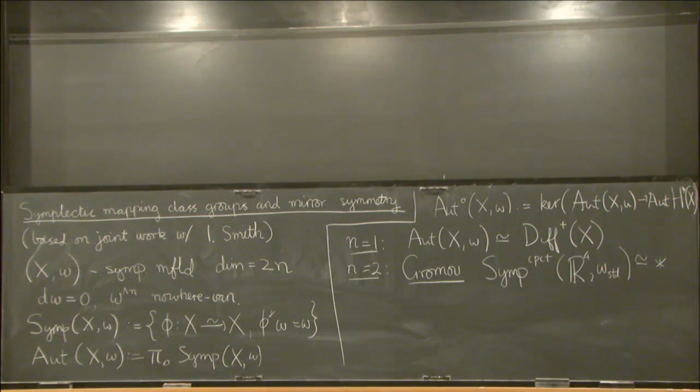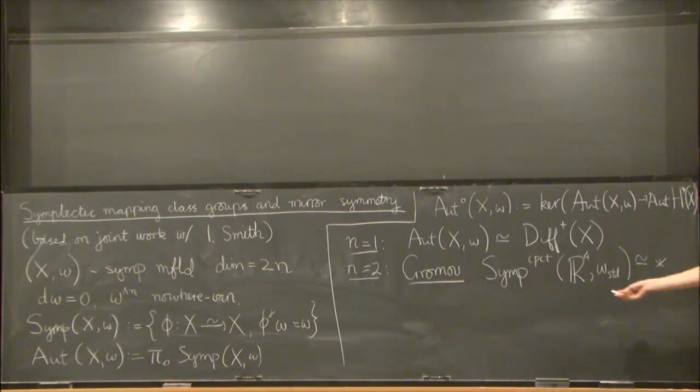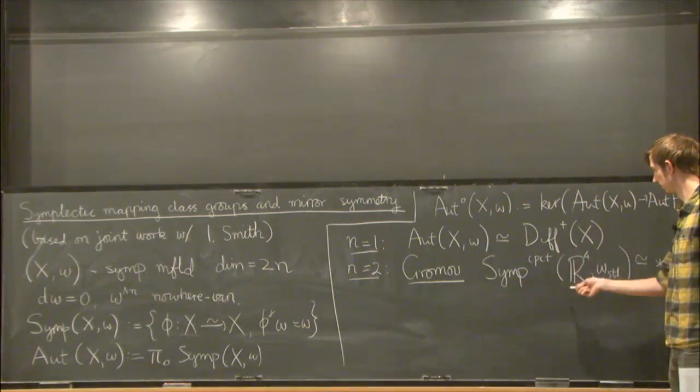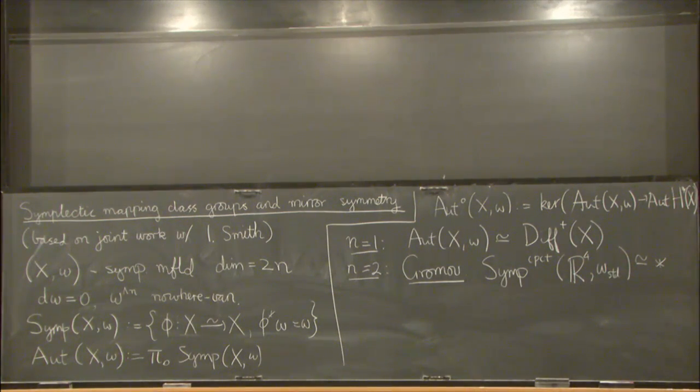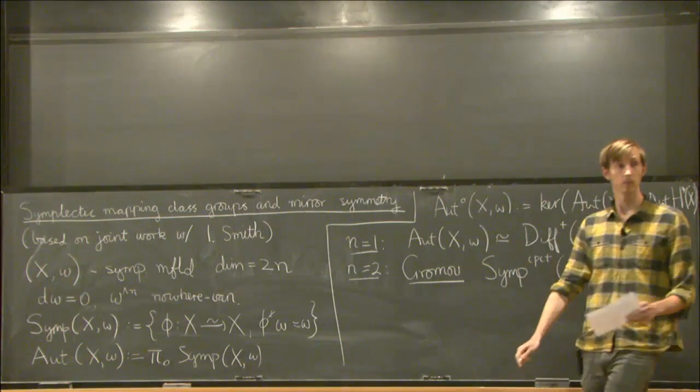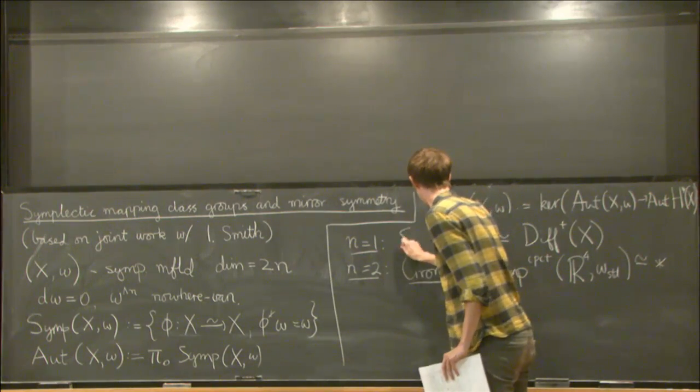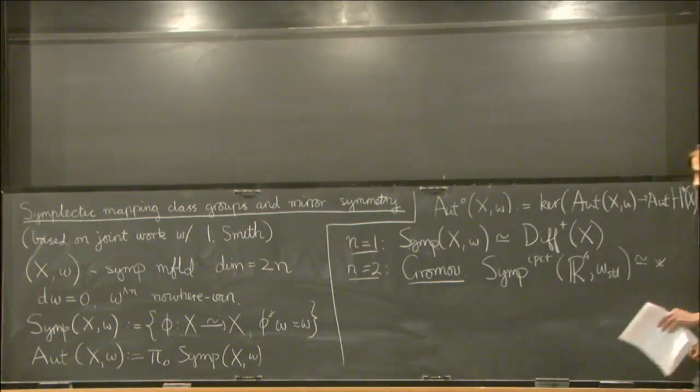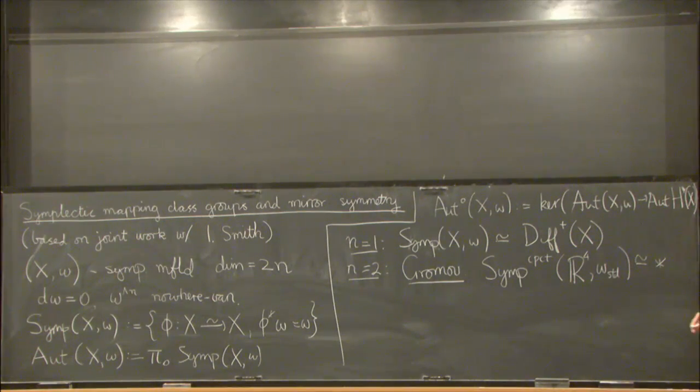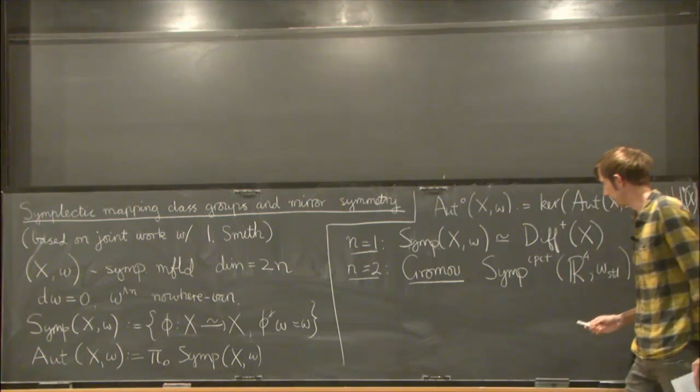Firstly, he proved the compact symplectic mapping class group of R4 with the standard symplectic form is contractible. And the analogous question about smooth diffeomorphisms, the compact smooth mapping class group of R4 is unknown. So, it's symplectic things we know much more about than the smooth things as it turns out. All right, so we have that one.